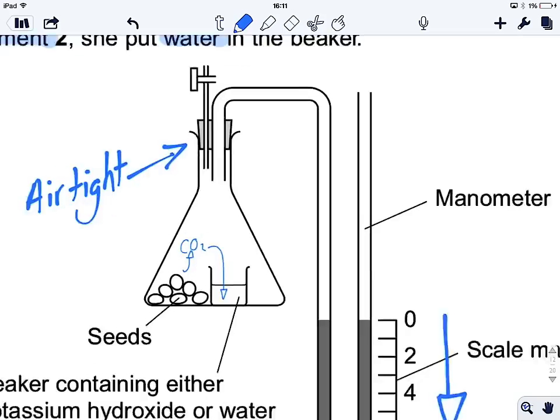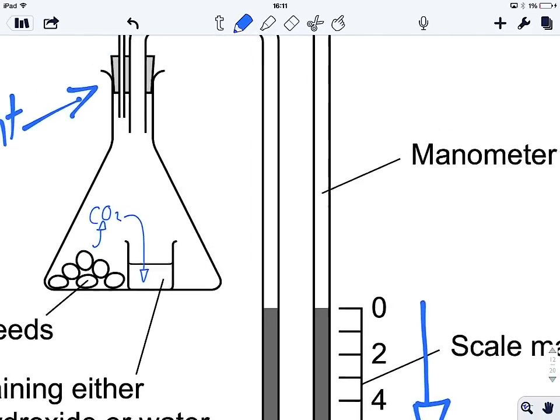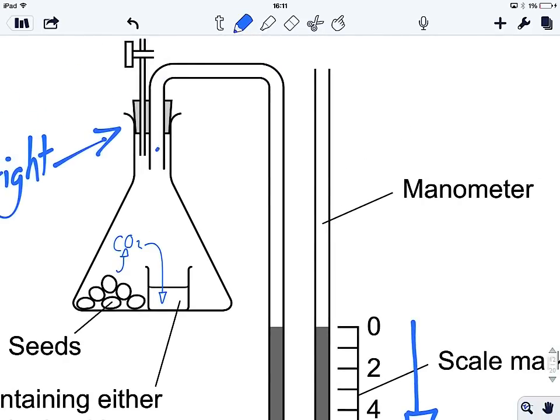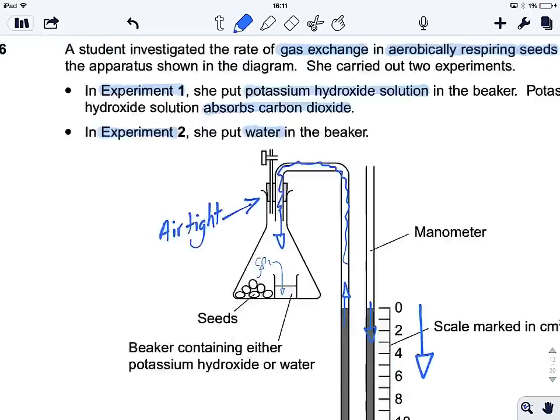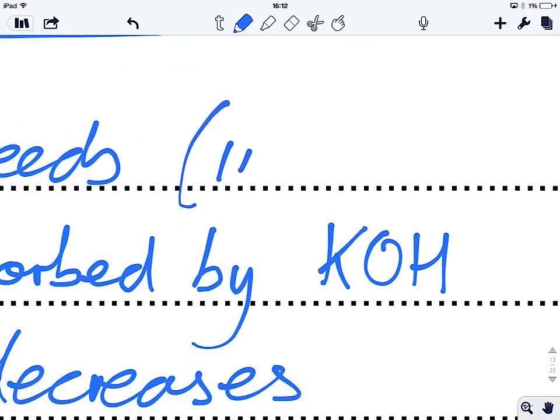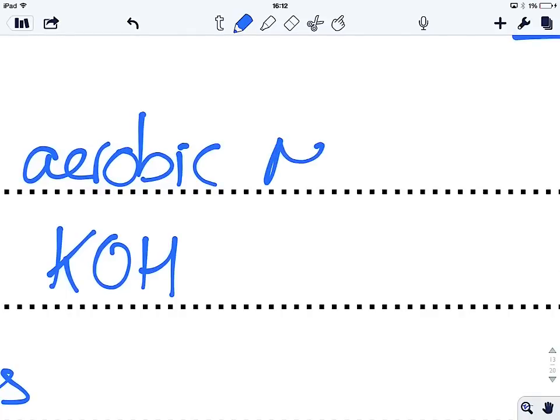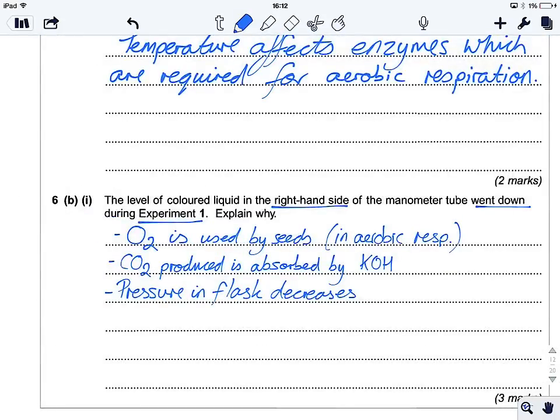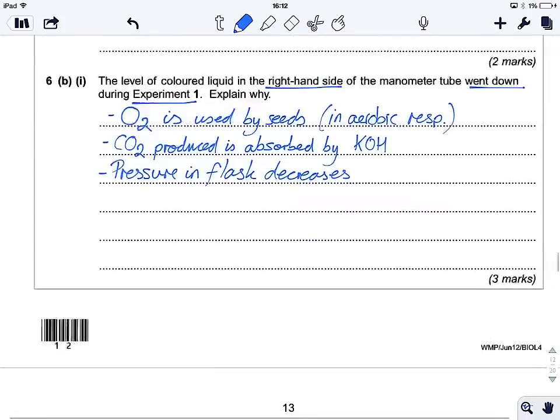So, if the pressure decreases, the atmospheric air that's in here, or whatever happens to be in here, is going to move around, and this liquid is going to move up. That means this side is going to move down. So, it's all to do with pressure. Cool. I think there's three marks there. So, oxygen is used by seeds. You could justify it by saying in aerobic resp, just to be sure. CO2 produced, absorbed by the potassium hydroxide, pressure in flask decreases. Three marks. Nice and straightforward.